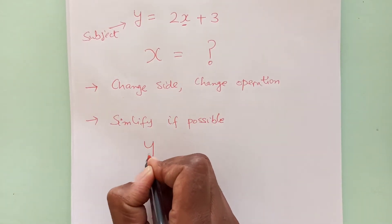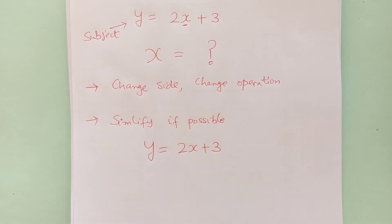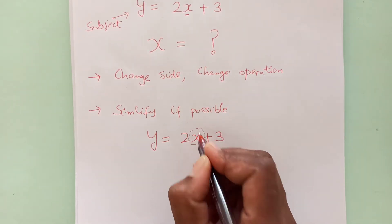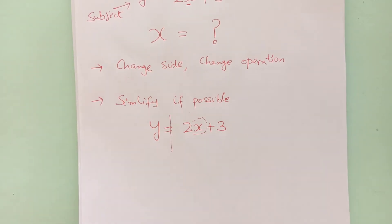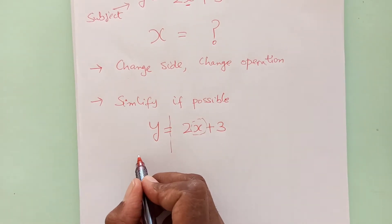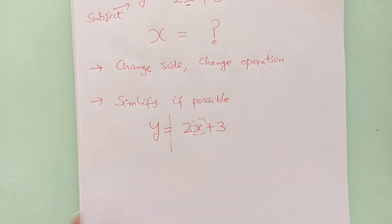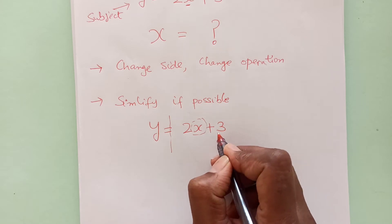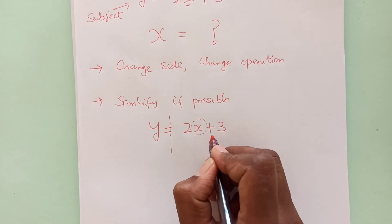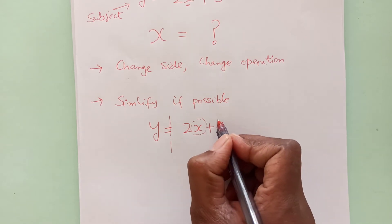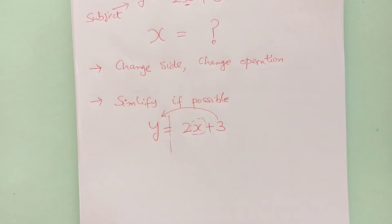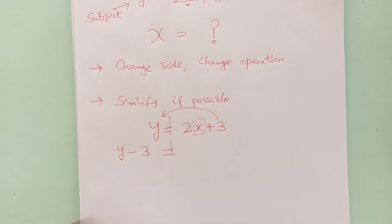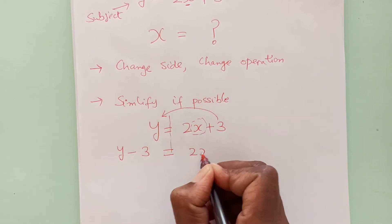We have y equals to 2x plus 3 here. Here y is the subject. Let's now make x the subject. We have two sides here, and we need x on the left-hand side and y on the right-hand side. So first, change sides. Change the side of the number or variable that is extra with x. Let's move 3 to the other side.